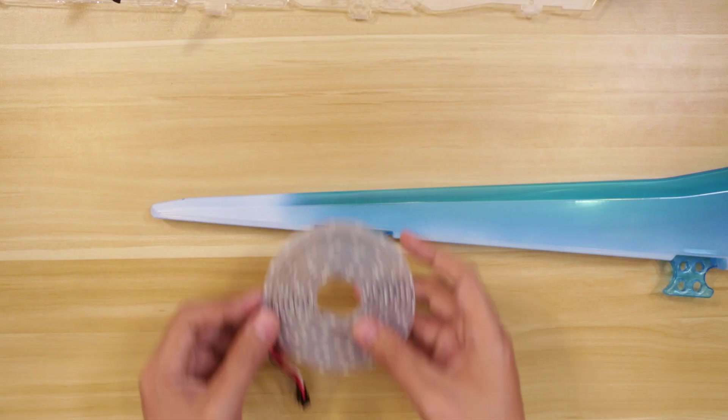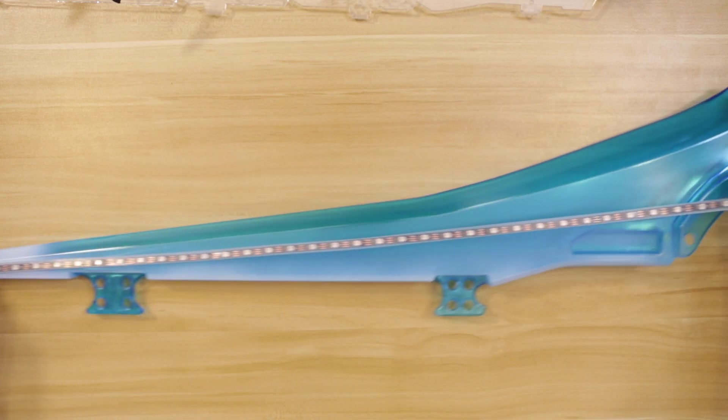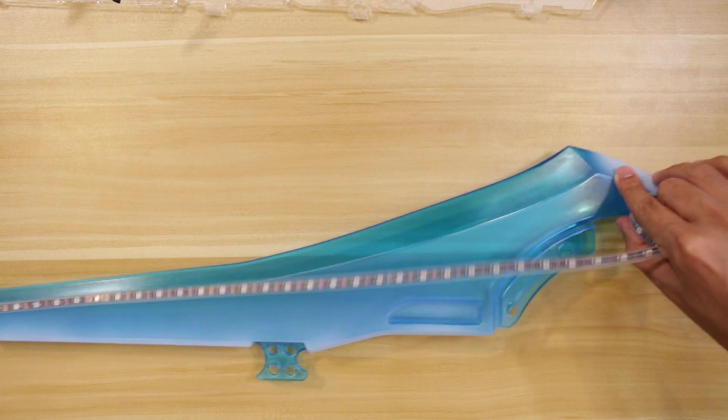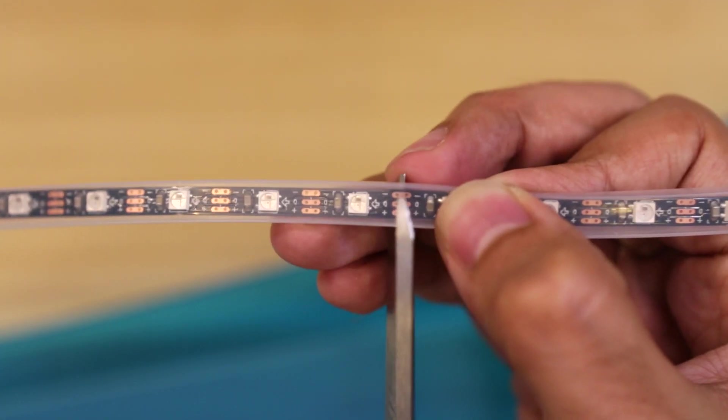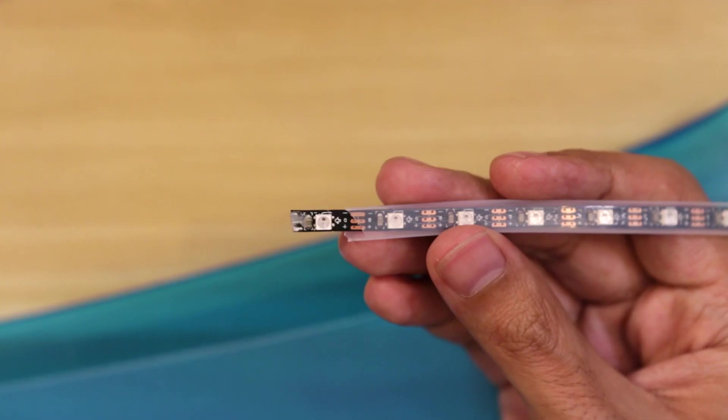I grabbed the strip of NeoPixels and started measuring how long they needed to be by lining them up with the blade. I was able to fit 43 NeoPixels per blade, a total of 86. So I cut up the strip using a pair of scissors and removed the connectors on the end. The sheathing didn't allow the strip to fit into the blade, so we won't need it.